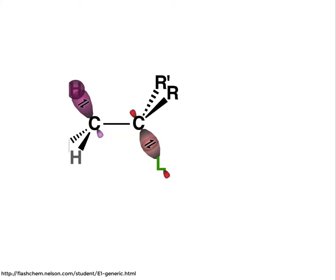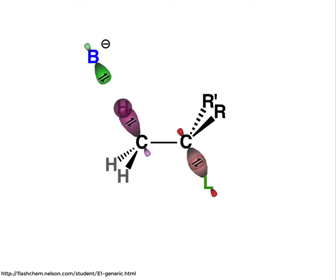Now let's take a look at the molecular orbital perspective for that reaction. As a starting point, we have a filled orbital shown on the base, the filled C-H sigma bond, and the filled C-leaving group bond. In the first step of the reaction, that leaving group will leave.